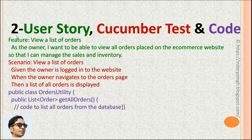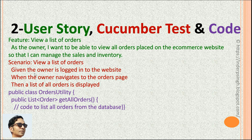This is the second example. The feature is 'view a list of orders,' and the user story for this feature is: as the owner, I want to be able to view all orders placed on the e-commerce website so that I can manage the sales and inventory. The Cucumber test has a scenario 'View a list of orders.' Given is the preconditions — given the owner is logged in to the website. When is the actions or steps — when the owner navigates to the orders page. Then is the expected result — then a list of all orders is displayed.